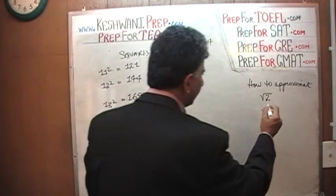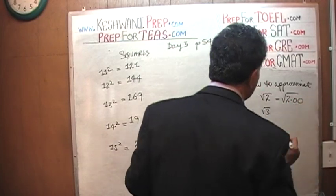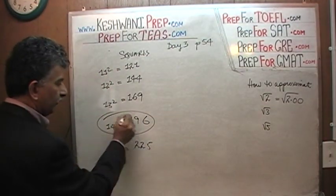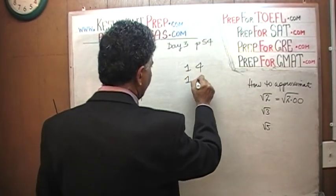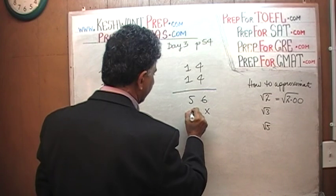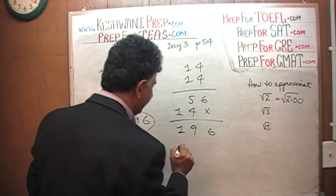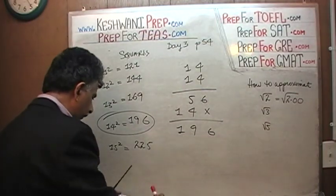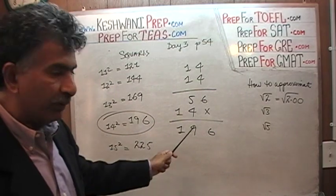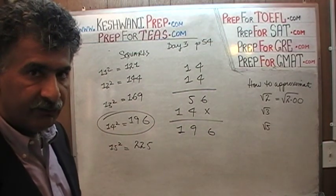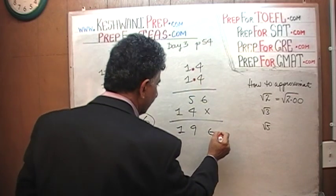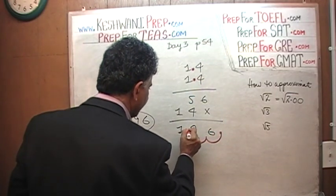Let's begin with root 2. Root 2 can be written as the square root of 2.00. We found yesterday that 14 squared — 14 times 14 — gives us: 4 times 4 is 16, write 6 carry 1, giving us 196. So 14 squared is 196. If we knew that 14 squared is 196, then 1.4 times 1.4 — since there is one decimal place in each factor, we move the decimal two places — must equal 1.96.